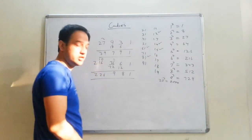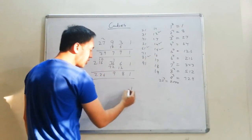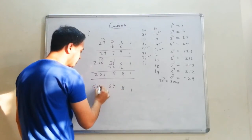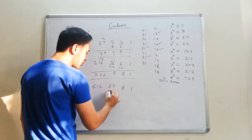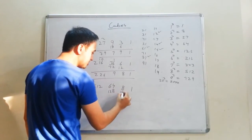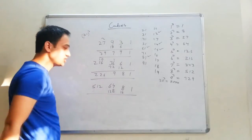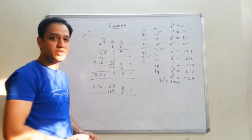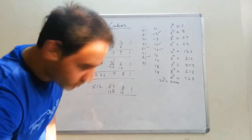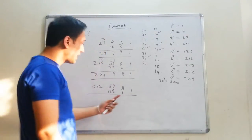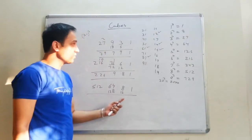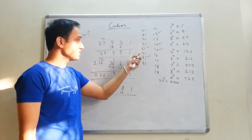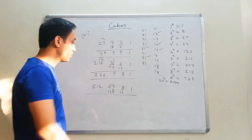Next, cube of 81: write 1, 8. Square of 8 is 64, cube of 8 is 512. Double these digits: 16 and 128. Add these digits and you'll find your answer. It's very easy. You can apply this formula to 21, 31, 41, 51, 61, 71, 81 and 91.